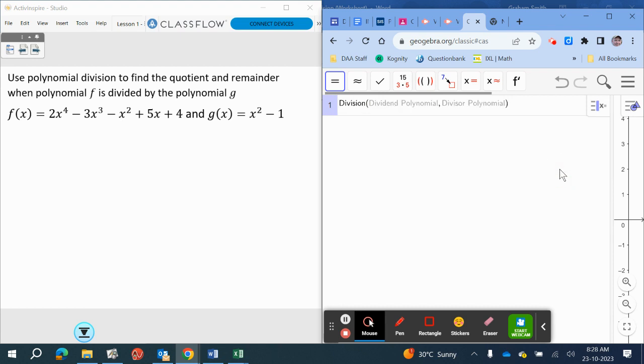So we're going to use this function and then we have to type it in. So we've got 2x to the power of 4 minus 3x to the power of 3 minus x squared plus 5x plus 4. This is going to be...